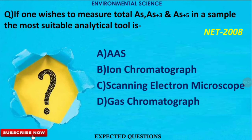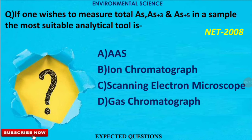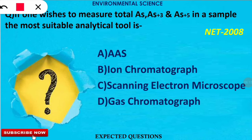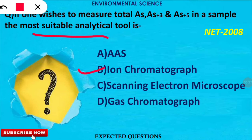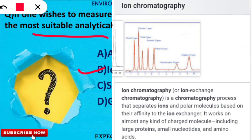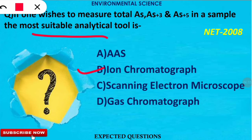The next question is: if someone wishes to measure total arsenic, arsenic(III) ion, and arsenic(V) ion in a sample, what would be the most suitable analytical technique? The correct option is B. Ion chromatography, also called ion exchange chromatography, works on almost any kind of charged molecule. Using this technique, a graph of different ions at different concentrations can be obtained.